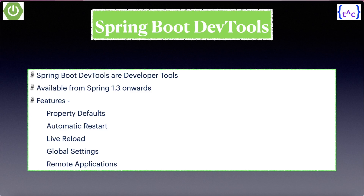The features that DevTools provides include property defaults — that means by default-enabled mechanisms which you can disable during development to get quick output. It also provides automatic application server restart, meaning while doing any changes in the Spring Boot application, you need not manually restart the server. It also provides additional features such as live reload, global settings, and remote application debugging. In this session, I will be mainly talking about automatic restart of the server.